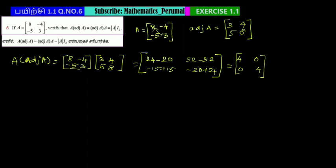Therefore, A times adjoint of A equals [4, 0; 0, 4].